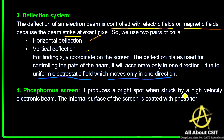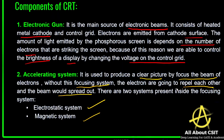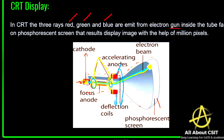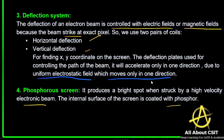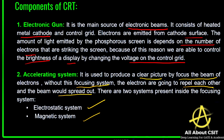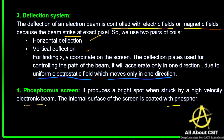The final component is the phosphorous screen, where the beams are emitted. It produces a bright spot when struck by a high-velocity electron beam. The internal surface of the screen is coated with phosphor. So the four main components of the CRT are: the electron gun, the accelerating or focusing system, the deflection system, and the phosphorous screen.